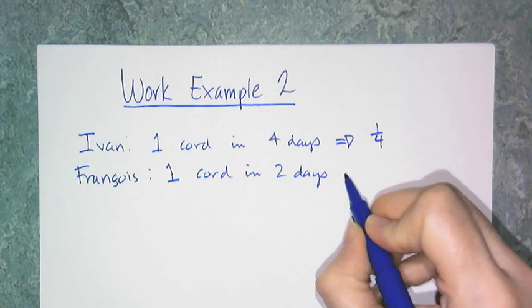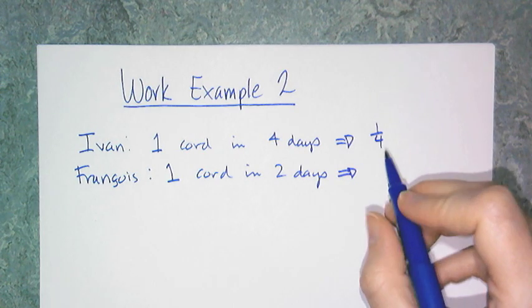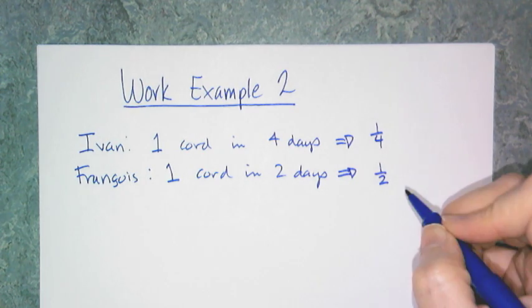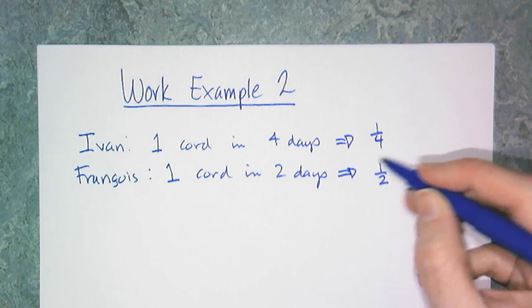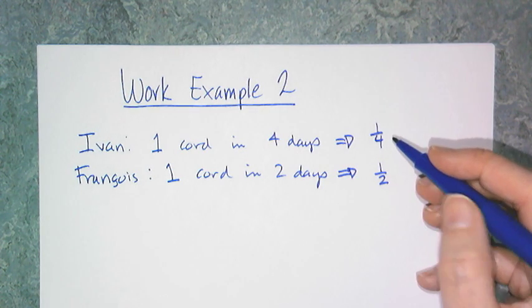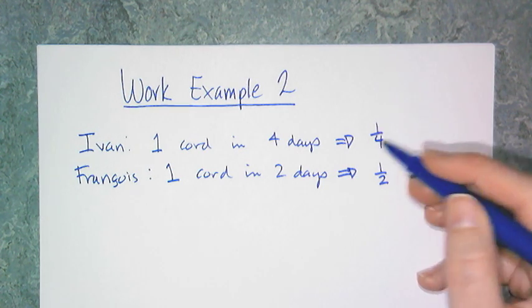This is his work rate. And then Francois' work rate is one-half, because he can do one job in two days, and if he just worked for one day, he would do a half of the job. And if Ivan worked for a day, he'd get a fourth of the job.